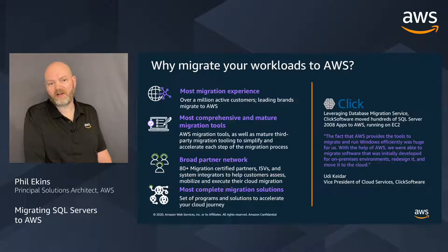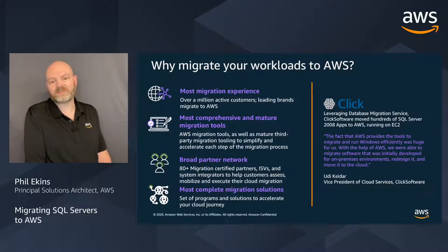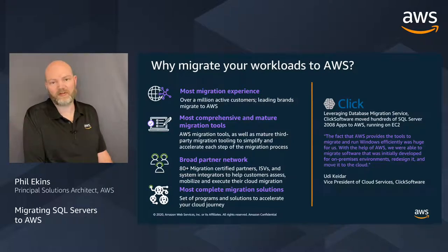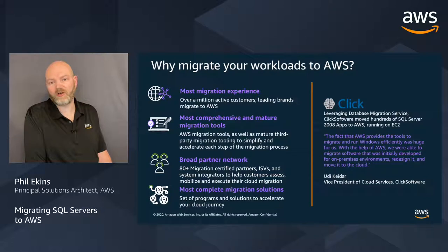A great customer example is Qlik Software, based out of Massachusetts. They provide software for scheduling and dispatching field service techs — a very sensitive application from a downtime perspective, where customers could be losing $100,000 an hour if the application is unavailable. When looking to migrate those workloads into AWS, that was a primary concern. They were able to leverage Database Migration Service and move hundreds of their SQL Server 2008 R2 workloads into AWS on EC2, while maintaining the uptime critical to their end customers.